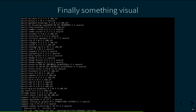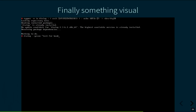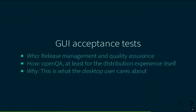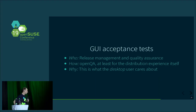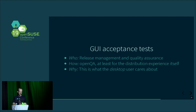If you want to see the full video, visit openqa.opensuse.org, select any job, and enjoy the show. For GUI acceptance tests, who does that? Again, release management and quality assurance — looking at results to check whether things still render correctly, otherwise openQA tests would also fail. How? Using openQA, at least for the distribution experience itself. Why? Because compared to system level tests, this is what the desktop user cares about — it matters how it looks.